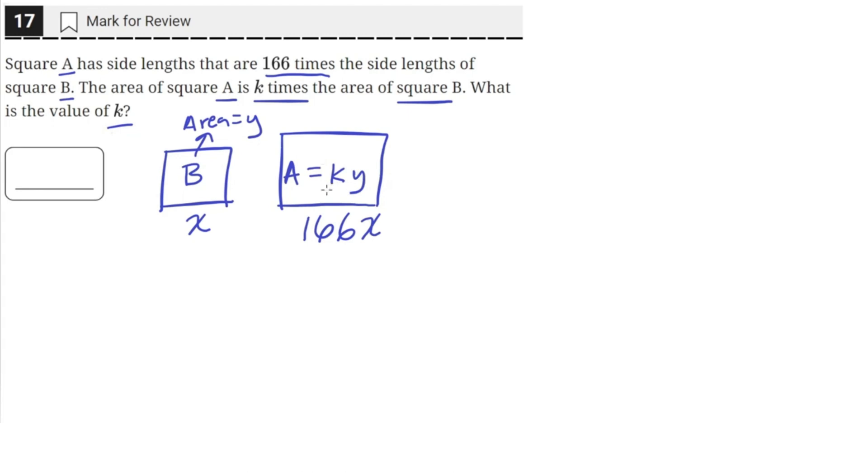We need to find out this constant that relates the area of square A with the area of square B. We know that the area of square B is just going to be x squared, so that's going to be y.